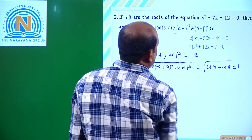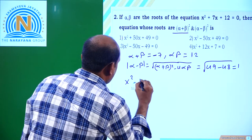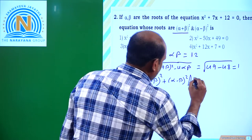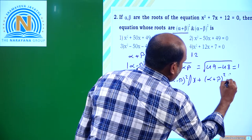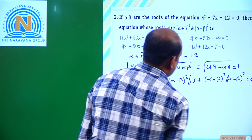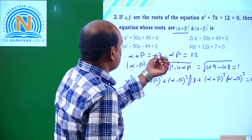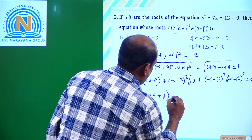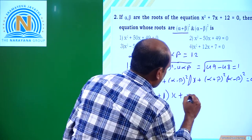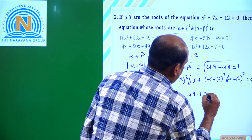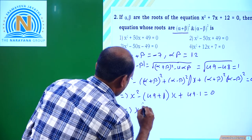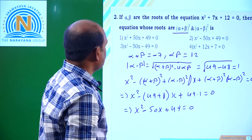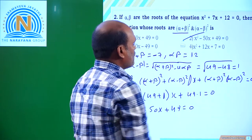The required quadratic equation whose roots are (α + β)² and (α - β)² is x² minus [(α + β)² + (α - β)²]x + (α + β)²·(α - β)² = 0. That gives x² minus [49 + 1]x + 49·1 = 0, which simplifies to x² - 50x + 49 = 0. Option 2 is the correct answer.